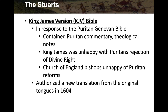King James was unhappy with the Puritans because they rejected the divine right of kings — they did not believe the king had authority given directly from God. They thought the Church of England needed to be purified. The Church of England bishops were also unhappy with Puritan reforms. So they came together and developed their own Bible from the king to the masses. James authorized a new translation from the original tongues in 1604, completed in 1611.